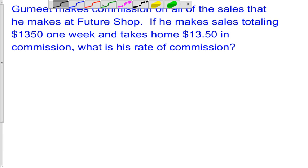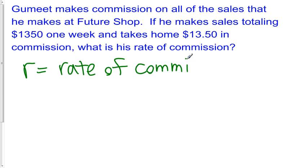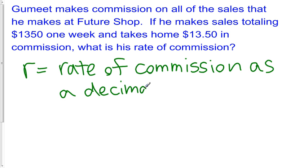What we're going to have to do here is define a variable for our unknown. So let's call that variable R, and let's say that R is the rate of commission as a decimal number. I'll talk a little bit about why I want to have that as a decimal number. When you're calculating commission — and we saw this in the video on calculating straight commission —